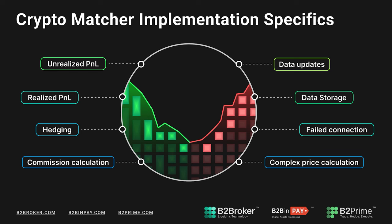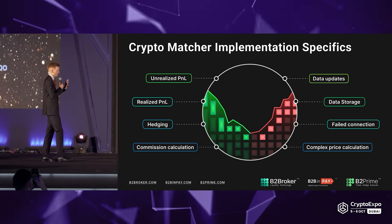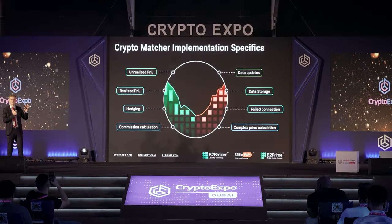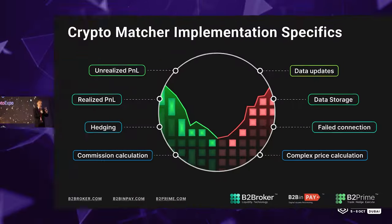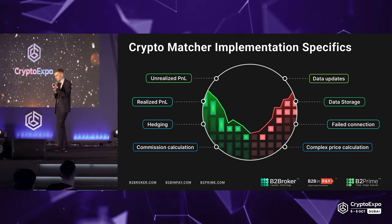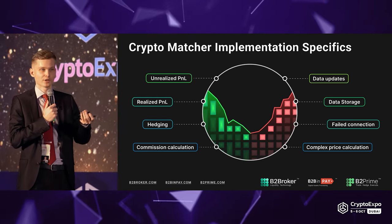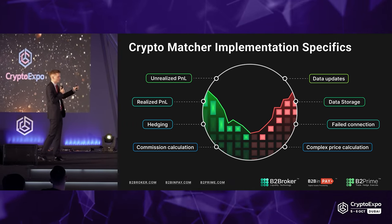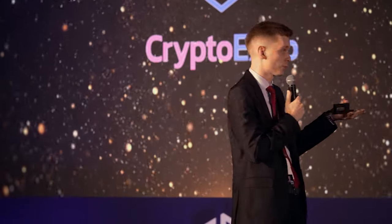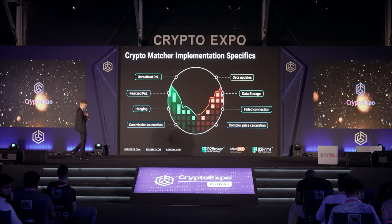Complex price calculation: I'm talking about pairs, for example two less significant cryptocurrencies or a cryptocurrency plus a fiat currency. The functionality formulates pricing and the order book based on a third price — the root asset, basically USD or USDT — where you check the price of the first cryptocurrency to USDT and the second cryptocurrency to USDT, and make a pair based on that third asset. Commission calculation is of course essential for all crypto spot exchanges — recalculating commissions for every single trade, supporting tiered commissions, and loyalty token commission structures.